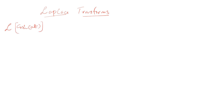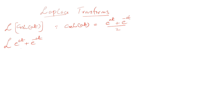cosh(at) may be written as (e^(at) + e^(-at)) / 2. So we will take the Laplace transform of (e^(at) + e^(-at)) / 2, which will be equal to the Laplace transform of cosh(at), because this function is equal to this.